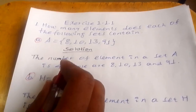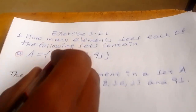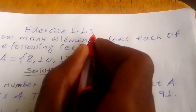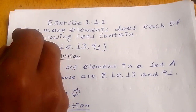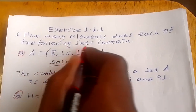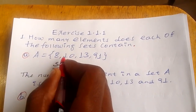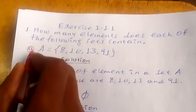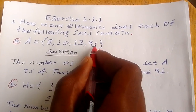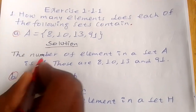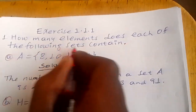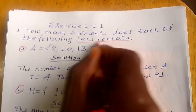Ok, the next one is an exercise. This exercise is from your textbook — Exercise 1.1.1. The first question gives the instruction: how many elements does each of the following sets contain? We are going to find the number of elements for each set. Set A contains 8, 9, 13, and 91.